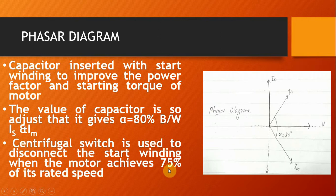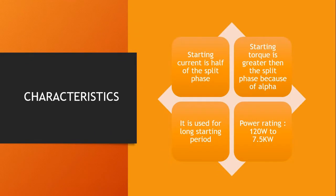Similarly, a centrifugal switch is used to disconnect the starter winding when we achieve 75% of the rated speed. A characteristic of the capacitor start induction motor is that the starting current is half of that of the split phase motor, meaning the current is decreased.